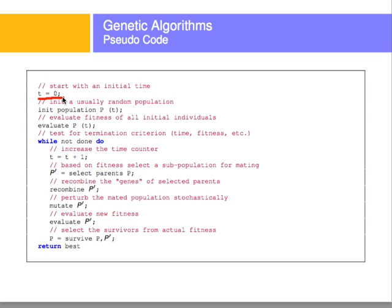As algorithm pseudocode, genetic algorithms go like this: initialize time zero, initialize the population at a given time, evaluate the fitness function of the population. Then increase the time, select the parents, recombine or cross over, mutate, evaluate again, see who survives, and repeat until you're done. When you're done, return whatever was the best. And that is, basically, genetic algorithms.